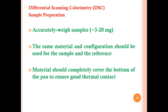In sample preparation for differential scanning calorimetry, the sample is accurately weighed at about 3 to 20 mg. The same material and pan configuration should be used for both sample and reference. The material should completely cover the bottom of the pan to ensure good thermal contact, meaning it fully acquires the programmed temperature.